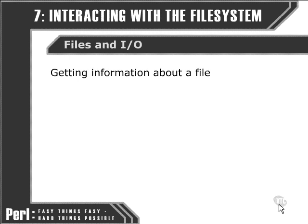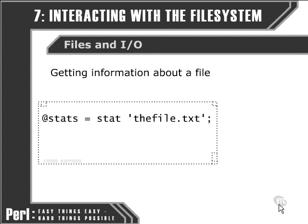We can also use Perl to get some statistical information about the text file that we choose to target. We can do this with the STAT function. The STAT function returns an array containing a set of statistics about the file that we specify as the argument of the STAT function. Note that brackets for the argument are optional.